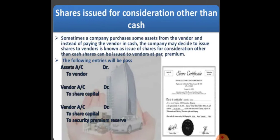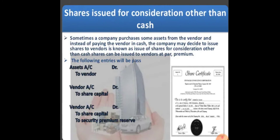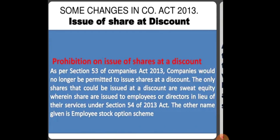Next is issue of shares for consideration other than cash. Sometimes a company purchases assets from a vendor — the seller — and instead of paying in cash, the company issues shares to the vendor. This is known as issue of shares for consideration other than cash. Shares can be issued at par or at premium. The journal entries are: Sundries account debit to vendor; then vendor account debit to share capital; or vendor account debit to share capital and security premium reserve.